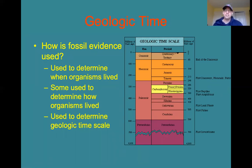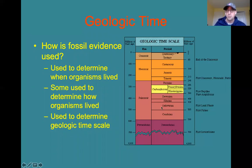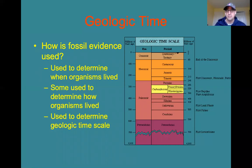So how is this fossil evidence used? It's used to determine when certain organisms lived, how they lived, and it's also used to determine the geologic time scale. The geologic time scale is broken up into eras and periods, and a lot of the dividing points for these different eras and periods are determined by which organisms were alive and which ones disappeared. The end of the Mesozoic era, for example, corresponds with the end of the dinosaurs when the asteroid crashed into the Yucatan Peninsula.